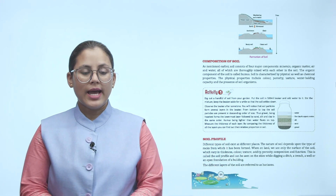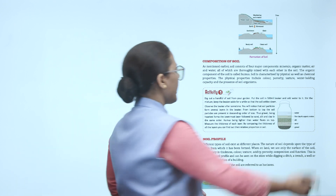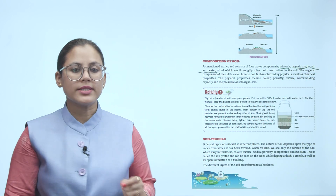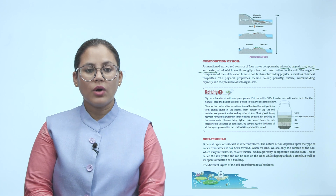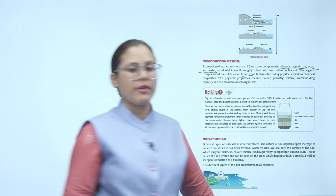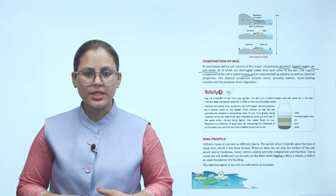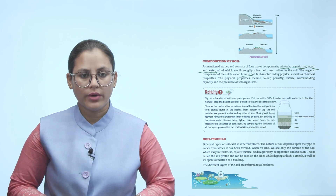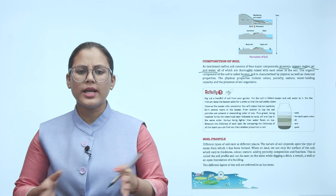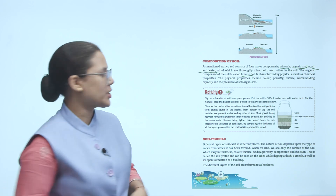Composition of soil: Soil consists of four major components — mineral, organic matter, air and water — all of which are thoroughly mixed with each other in the soil. The organic component of the soil is called humus. Soil is characterized by physical as well as chemical properties. The physical properties include color, porosity, texture, water holding capacity and the presence of soil organisms.